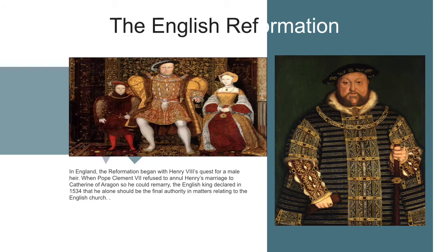Feudal lords who had exchanged their dues for cash used it to pay professional soldiers who were often formed into private armies in England. In these unstable conditions, worsened by financial strains resulting from defeat in France, rivalry broke out between two noble families who claimed the throne: the House of York, whose badge was a white rose, and that of Lancaster, a red rose. The struggle became known as the Wars of the Roses, and it lasted for 30 years.